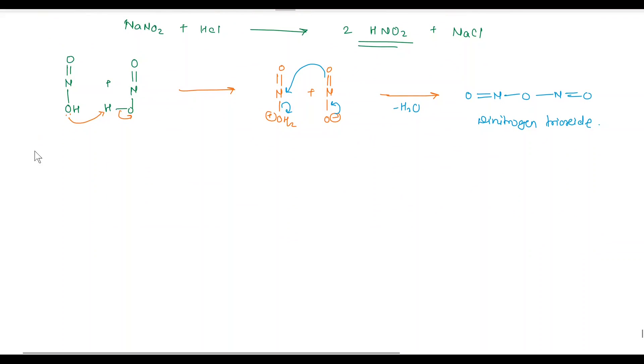Now, third step is reaction of dinitrogen trioxide with aryl primary amines. Here, NH2, which on treatment with dinitrogen trioxide. Here, the lone pair of nitrogen attacks on this nitrogen. This bond opens on this oxygen. And we get here nitrogen bond with the structure.